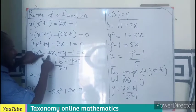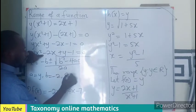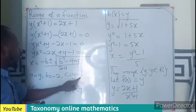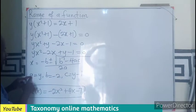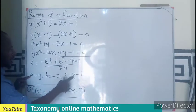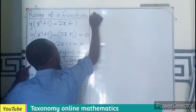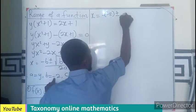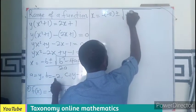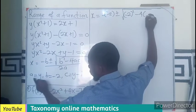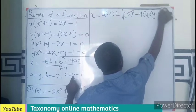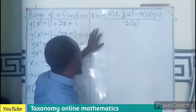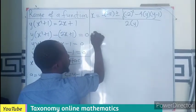The quadratic formula gives x = (−b ± √(b² − 4ac)) / (2a). From our equation yx² − 2x + (y − 1) = 0, we identify: a = y, b = −2, and c = y − 1. Substituting into the formula: x = (−(−2) ± √((−2)² − 4·y·(y−1))) / (2·y), which simplifies to x = (2 ± √(4 − 4y(y−1))) / (2y).